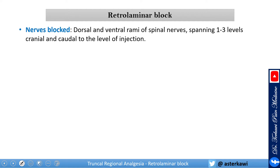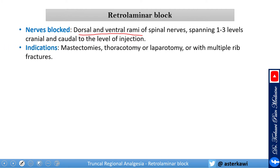What nerves are you blocking? The idea is that you are blocking the dorsal and ventral rami of the spinal nerves, very similar to a paravertebral block. However, it is unlikely that you will block the sympathetic ganglion, so most likely you will not get a sympathetic block — but you will get a good somatic innervation block.